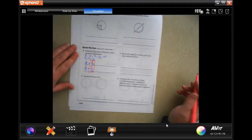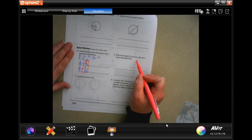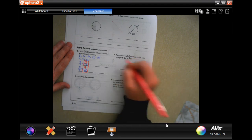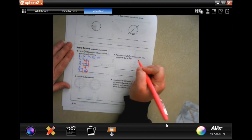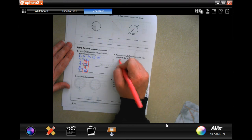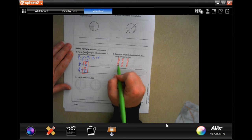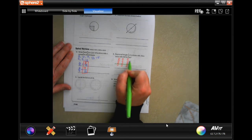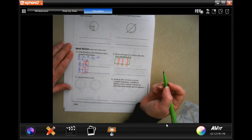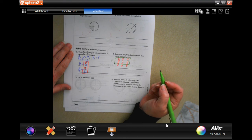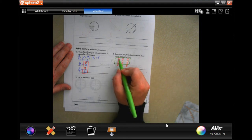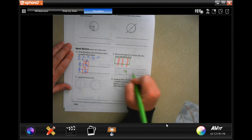Raymond bought three quarters of a dozen rolls. How many rolls did he buy? I'm going to put them in rows of four: one, two, three, four, five, six, seven, eight, nine, ten, eleven, twelve. Now he bought three quarters. So how many did he buy? One, two, three, four, five, six, seven, eight, nine. Nine rolls.